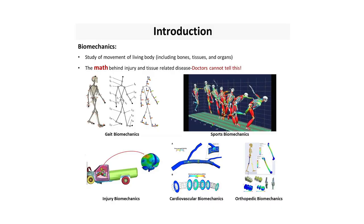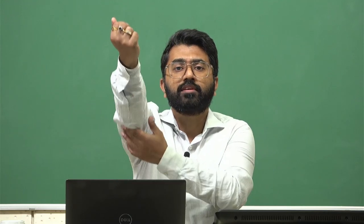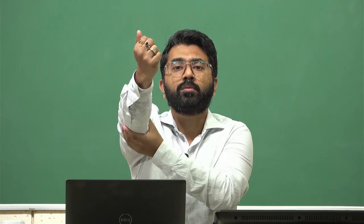Let us take a quick look into some broad categories of biomechanics. The first one is gait biomechanics. By its term, gait biomechanics refers to the locomotion or movement of the entire body. It can be seen in the form of different forces and velocities of every small point, junction, or joint of the human body — how they are moving — tracked in terms of skeleton. These are specific fixed points on the body that are tracked.